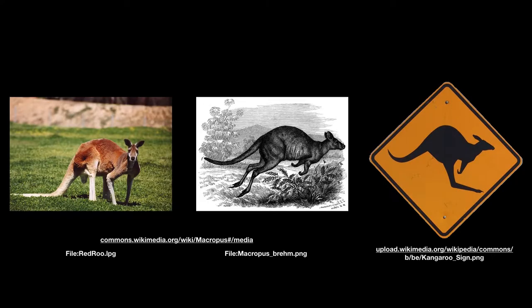A dictionary definition gives us some inkling of what abstraction may mean when it says 'dealing with ideas rather than events.' And if we look at this series of kangaroo images, it gives us some insight into abstraction. As we move from left to right, we see less of a particular type of kangaroo and more of the essence of kangaroo-ness.